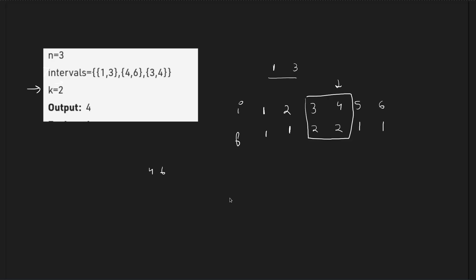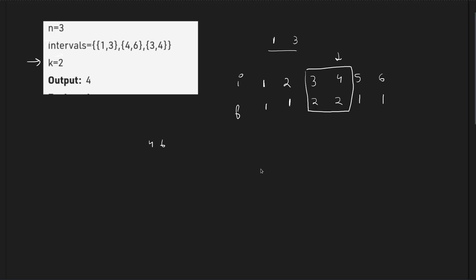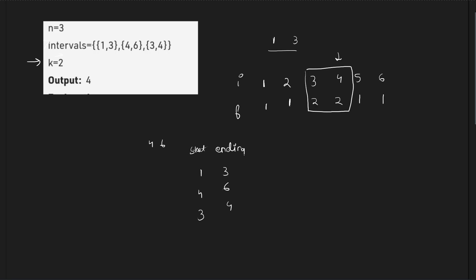How do we actually solve this problem? There is a very interesting approach we have discussed multiple times in these problem-of-the-day videos. Whenever we have been given such ranges, we divide the ranges into two parts — the starting range and the ending range. These will be the starting points and these will be the ending points.